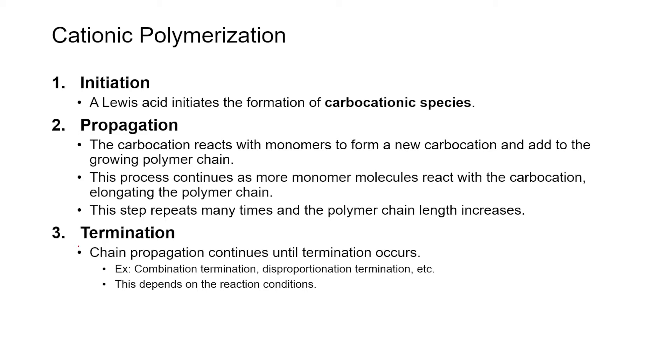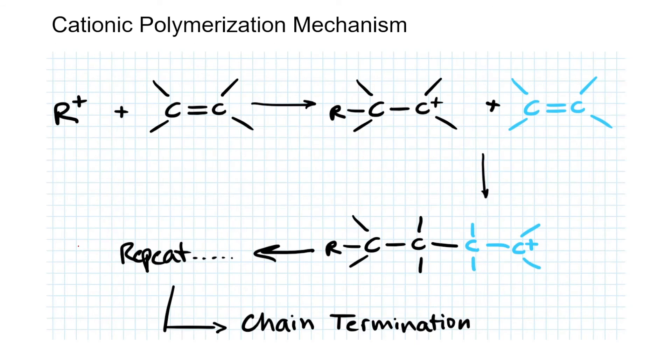That being said, let's go ahead and dive into the cationic polymerization mechanism. Now, here we have our cationic species that was formed using the Lewis acid. What's going to happen is you're going to have your C double bond C, or your electron-rich double bond here, come in and take this cationic species.